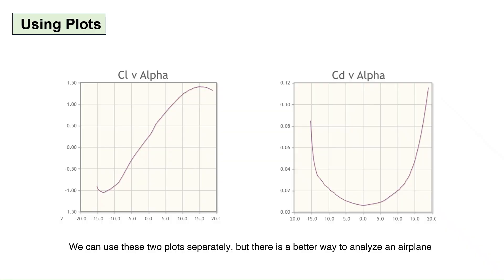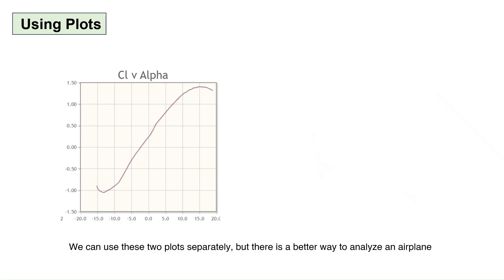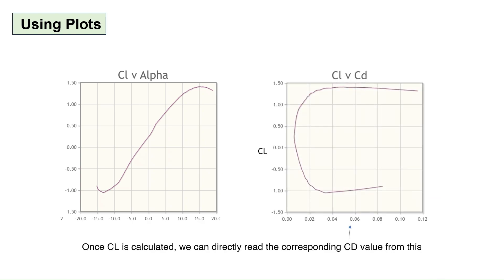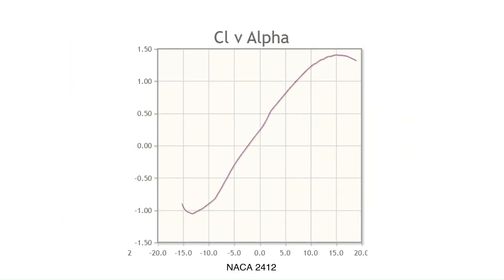We can use CL versus angle of attack and CD versus angle of attack plots separately to analyze an airplane, but there exists a better way. Using the lift equation, we can rearrange and easily calculate the lift coefficient the airplane is flying at for a given airspeed and altitude. It is therefore common to plot CD against CL. This type of plot has CD on one axis and CL on the other and is referred to as the airfoil's drag polar. This polar is the most useful form of airfoil data for the calculation of airplane performance.